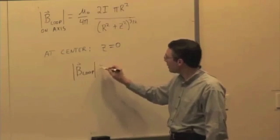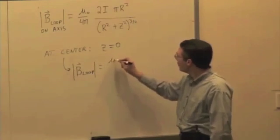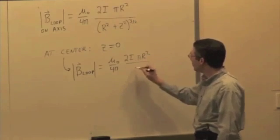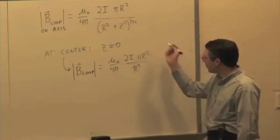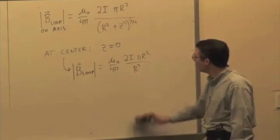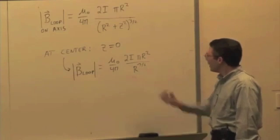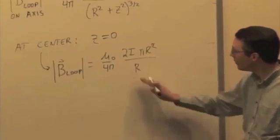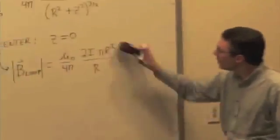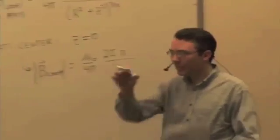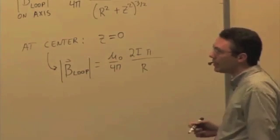So, at the center, we get mu naught over 4 pi, 2i times pi r squared over r squared plus 0, or r squared to the 3 halves is going to give me r cubed. Or r cubed, excuse me. And then r squared and r cubed divide out. We get just 2i pi over r. So, we get a non-zero result. It's not important what exactly the result is. But you get a non-zero magnetic field at the center, just as you have a non-zero magnetic field everywhere along that center axis.